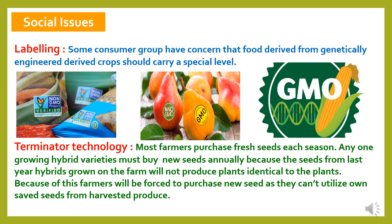Social issues related to genetic engineering include: labelling — some consumer groups have concerns that food derived from genetically engineered crops should carry a special label. Another is Terminator technology — most farmers purchase fresh seeds each season. Anyone growing hybrid varieties must buy new seeds annually because seed saved from last year's hybrid will not produce identical plants. Because of this, farmers will be forced to purchase new seeds as they cannot utilize their own saved seed from harvested produce.